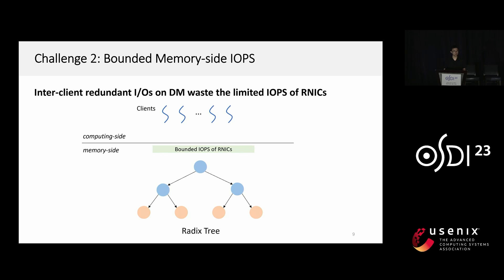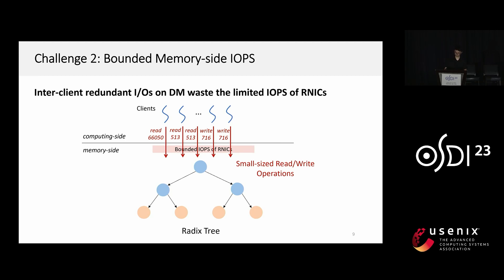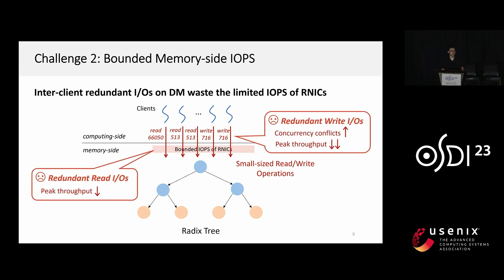The second challenge is the bounded memory-side IOPS. The RDMA network interface card in the memory pool of DM has bounded IOPS. As the radix tree introduces small-sized read and write operations, it saturates the IOPS upper bound of the NIC. Many of these operations are redundant when multiple clients from the same compute node concurrently traverse the tree. These redundant read and write IOs consume the limited IOPS, increase concurrency conflict, and thus decrease the peak throughput of the radix tree.